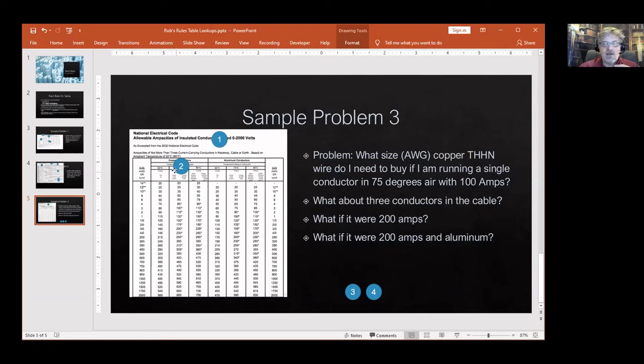THHN you can buy from Lowe's, you buy it from all sorts of electrical supply houses. It is probably the single most standard wire available for general use in construction or in machines. So THHN I can see that, you can't see it but it's in this column right here, so I know I've got the right column there.